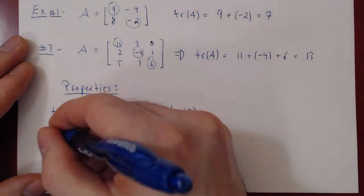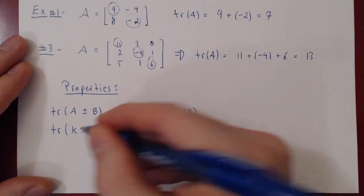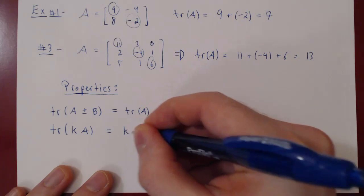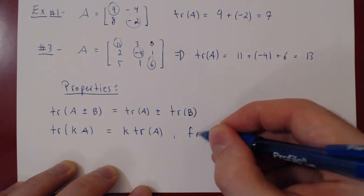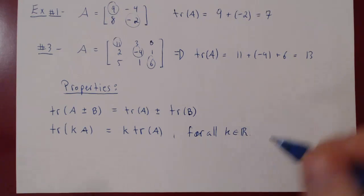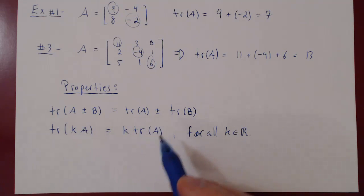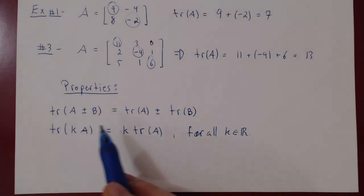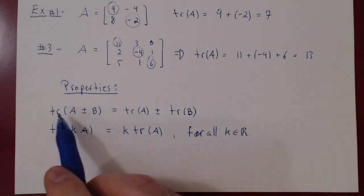Another property: the trace of k times A, where k is a real number, you can simply move the real number outside of the trace. This is k times the trace of A, and this is true for all real numbers k. I will leave the proof as an exercise — it should take no more than one line. Very simple property, very easy to prove.